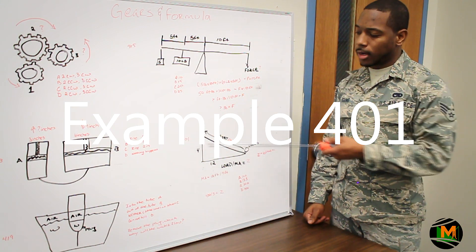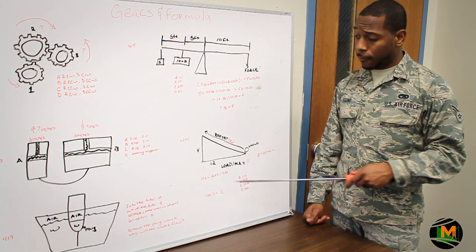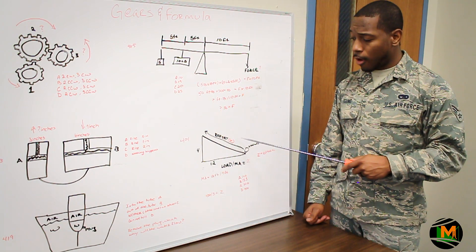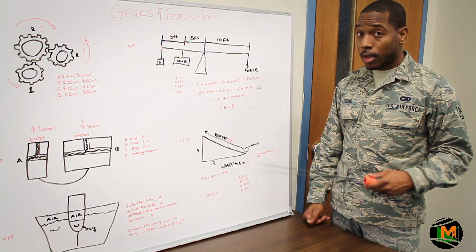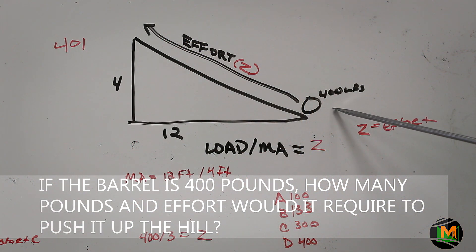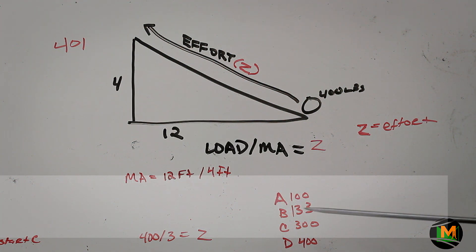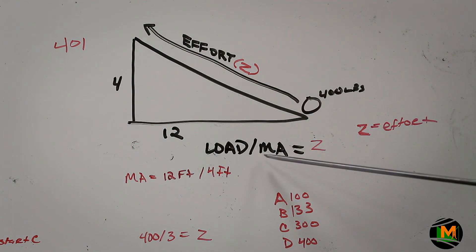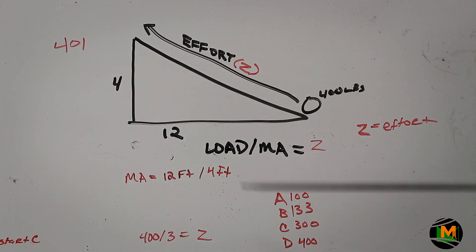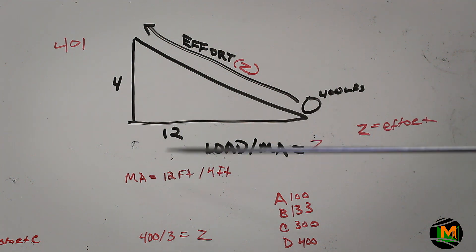Example 401 is furthermore in depth with figuring out how to solve a problem using an equation. The question states: if the barrel is 400 pounds, how many pounds of effort would it require to push it up the hill? To figure this out, you would use the load, which is 400 pounds, divided by the mechanical advantage, which will give you the effort.